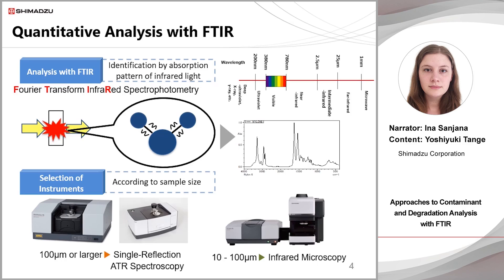This section describes how to use FTIR to analyze samples. FTIR stands for Fourier Transform Infrared Spectrophotometry. When the sample is irradiated with infrared light, the sample absorbs the same amount of energy as the vibration energy. The vibration energy of each functional group is different, so the structure of the contaminant can be estimated by the position of the peak wave number in the IR spectrum.